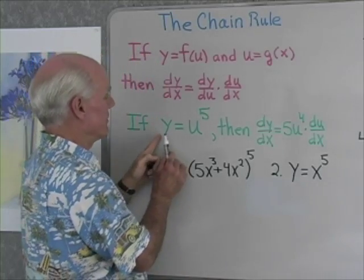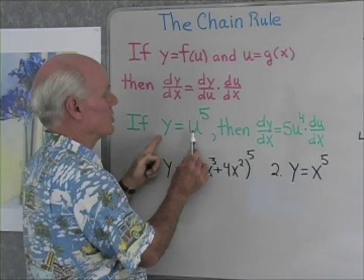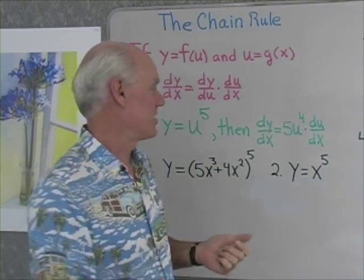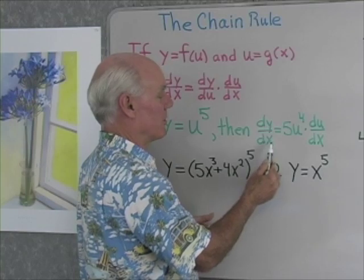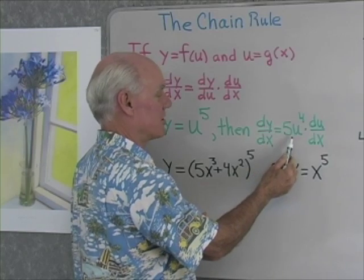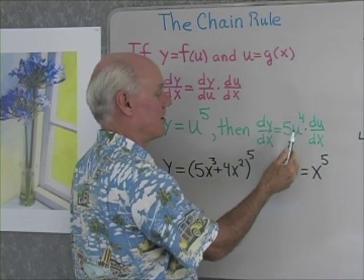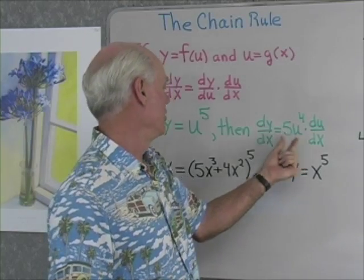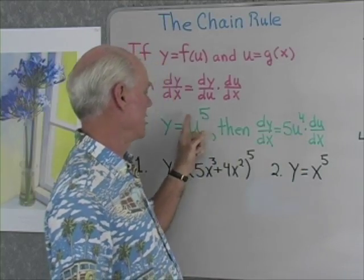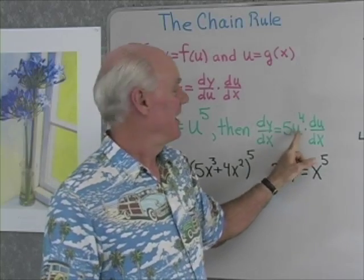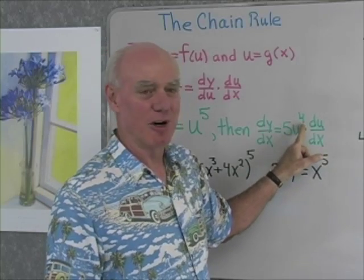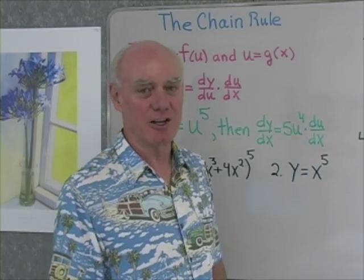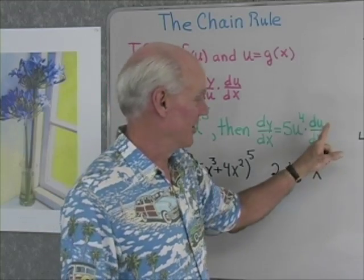For instance, if we had y equals u to the fifth and u was a function of x, then the derivative of y with respect to x would be dy/du — so here I differentiate with respect to u, which just means I take the exponent out in front, then subtract one from it, then I differentiate the base, dy/dx.